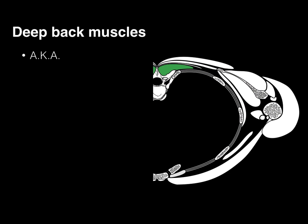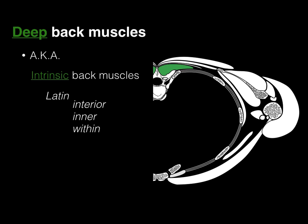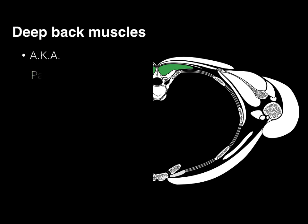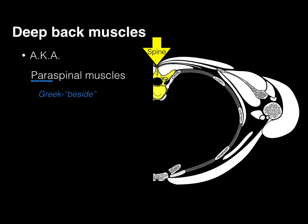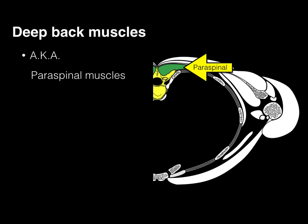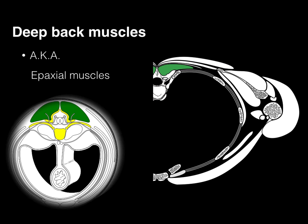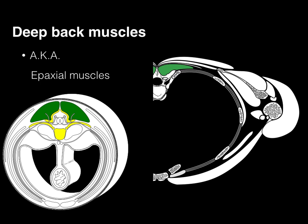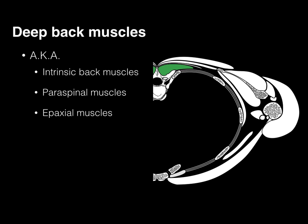The deep back muscles are also known as intrinsic back muscles, because the word intrinsic in Latin means interior, the inner, or within. They're also known as paraspinal muscles because the prefix para in Greek means beside — beside the spine are these deep back muscles, hence the name paraspinal. They're also known as epaxial muscles because the epimere portion of the myotome becomes the epaxial muscles. Most physicians call them paraspinal muscles.